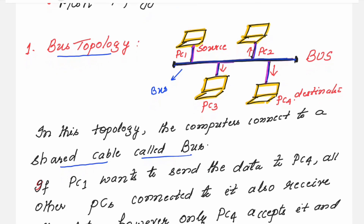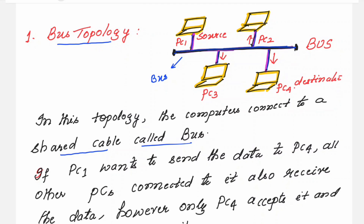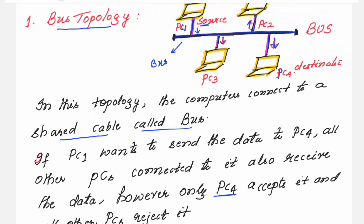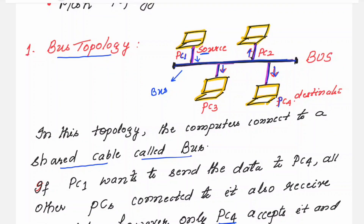If PC1 wants to send the data to PC4, all other PCs connected to the shared cable also receive the data. PC1 is the source and it wants to send data to PC4, but when the data is placed on the shared cable, PC2 and PC3 will also receive it along with PC4. That means all PCs connected to the shared cable will receive the data — if there are 10 PCs connected, all 10 will receive. Since the data is intended only for PC4, PC4 will accept it and all other PCs will reject the data. This is the working of the bus topology.